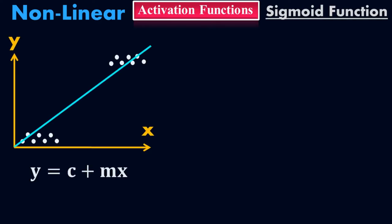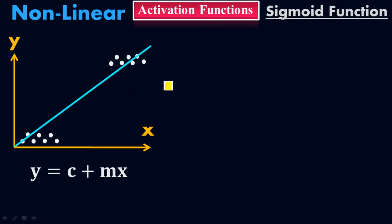Suppose my model is y equals c plus mx — that's a linear graph. To make the dataset nonlinear, we use the sigmoid function. The linear graph is not perfect because we need the two classes of data separated nicely. I need a decision boundary not as a straight line, but in an S-shape — one side for class 1 and the other for class 2.